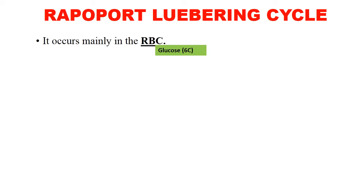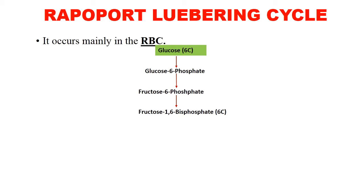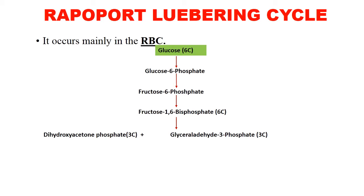In glycolysis, the glucose 6-carbon molecule is finally converted to a 3-carbon pyruvate molecule. Glucose is converted to glucose 6-phosphate, which is isomerized to fructose 6-phosphate, then phosphorylated to fructose 1,6-bisphosphate. This is broken down to two 3-carbon molecules: dihydroxyacetone phosphate and glyceraldehyde 3-phosphate. Dihydroxyacetone phosphate can be isomerized to glyceraldehyde 3-phosphate.